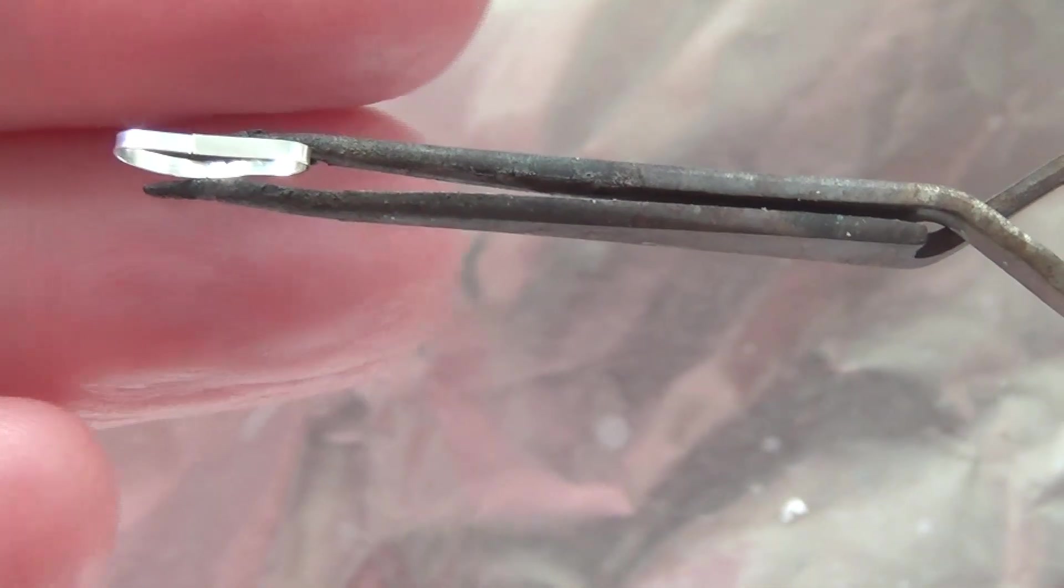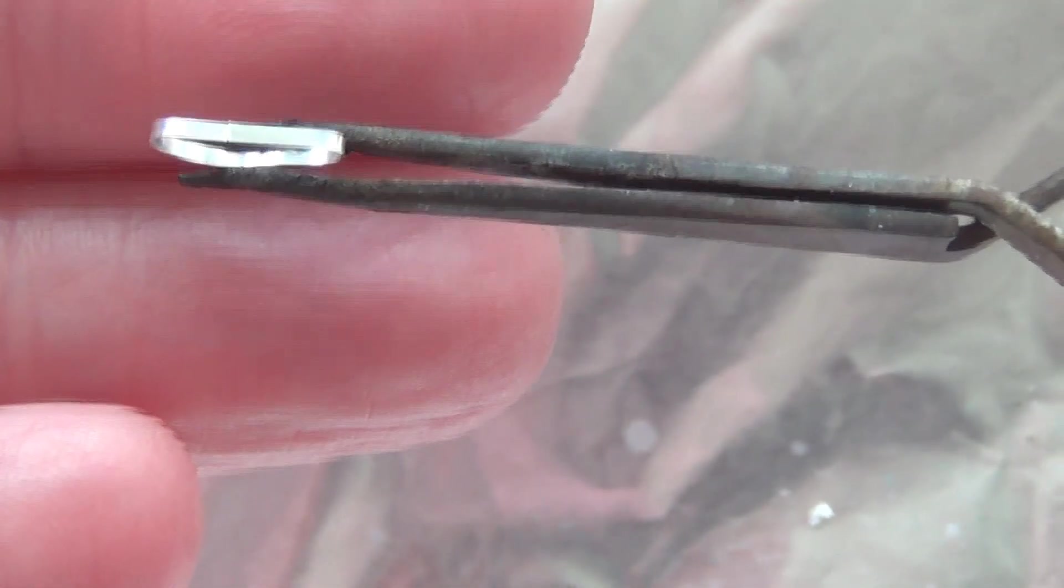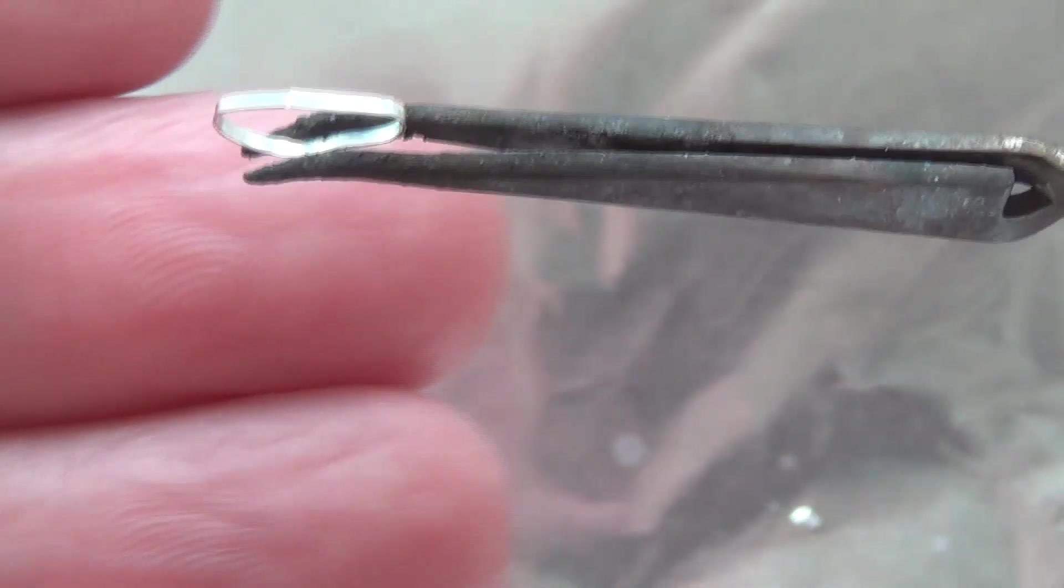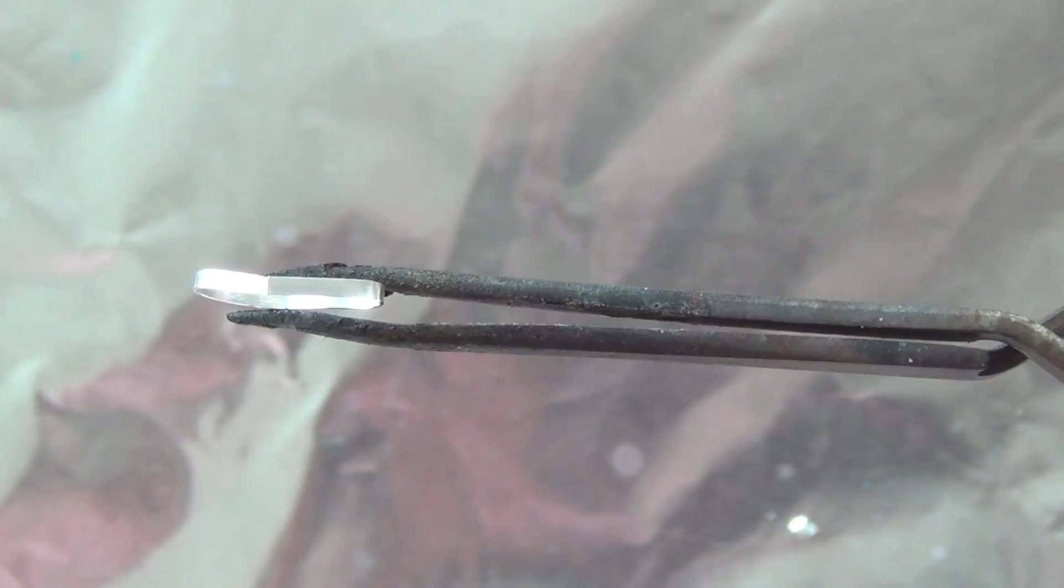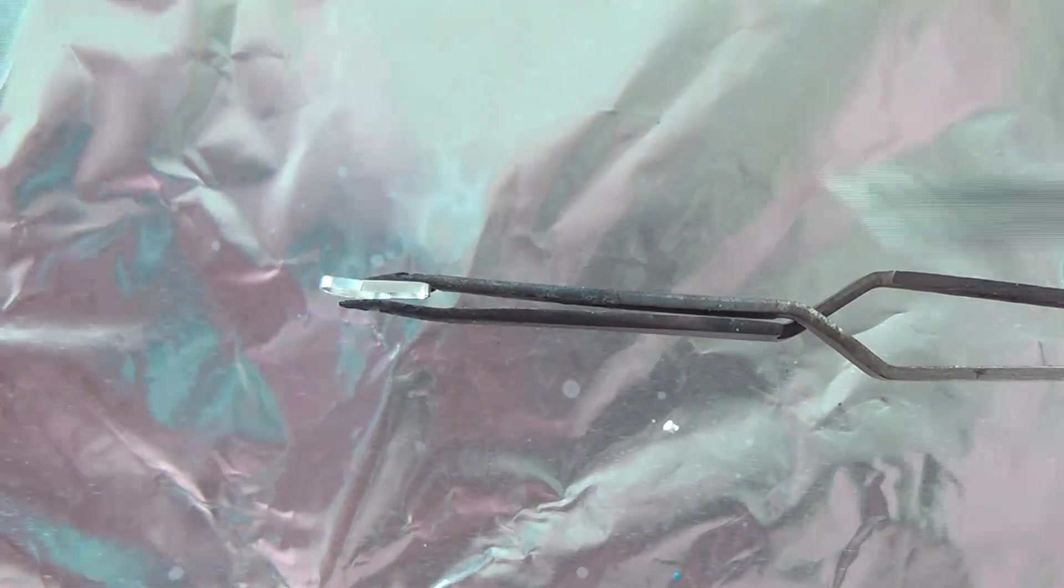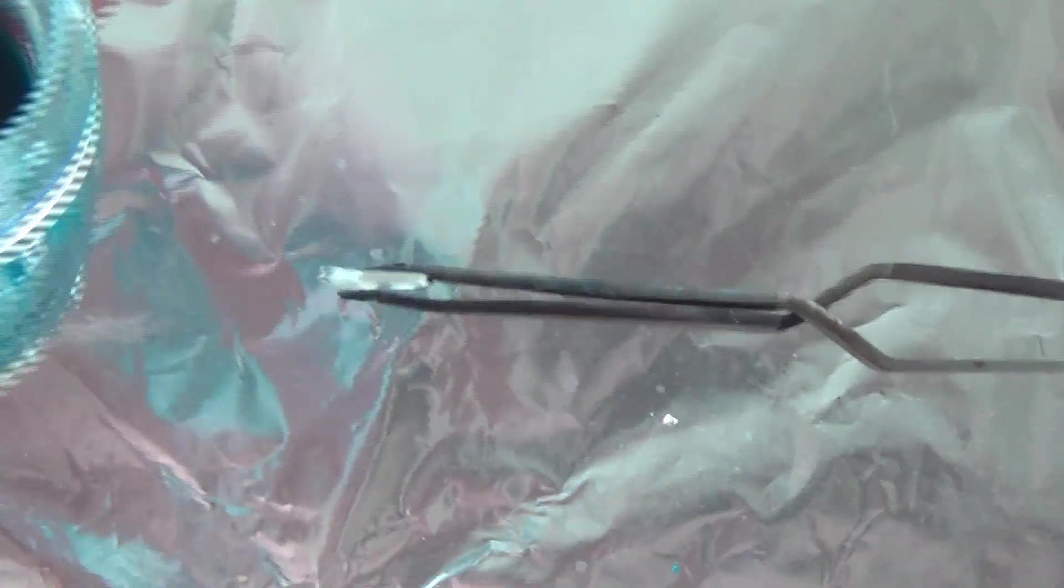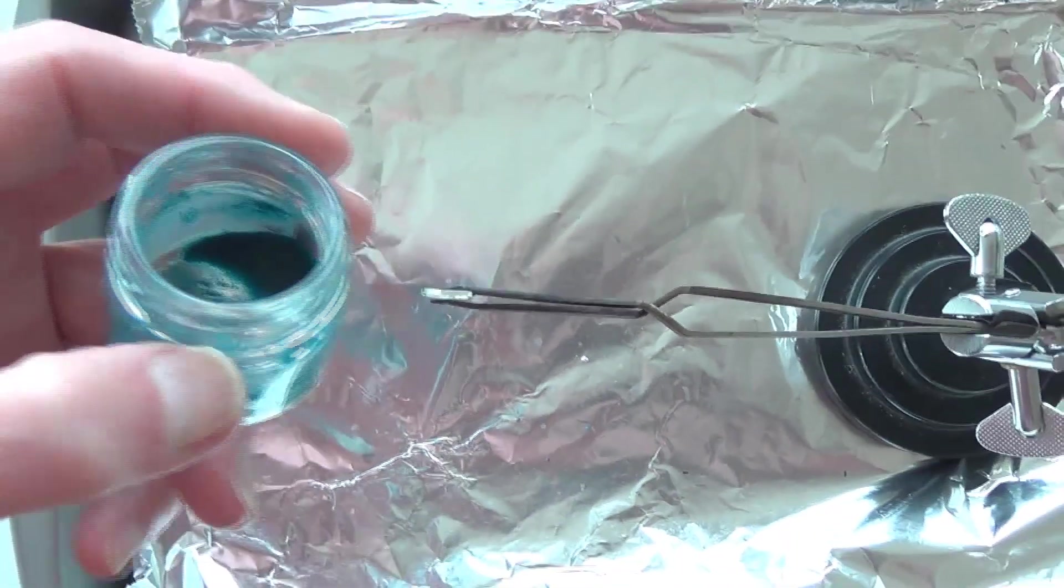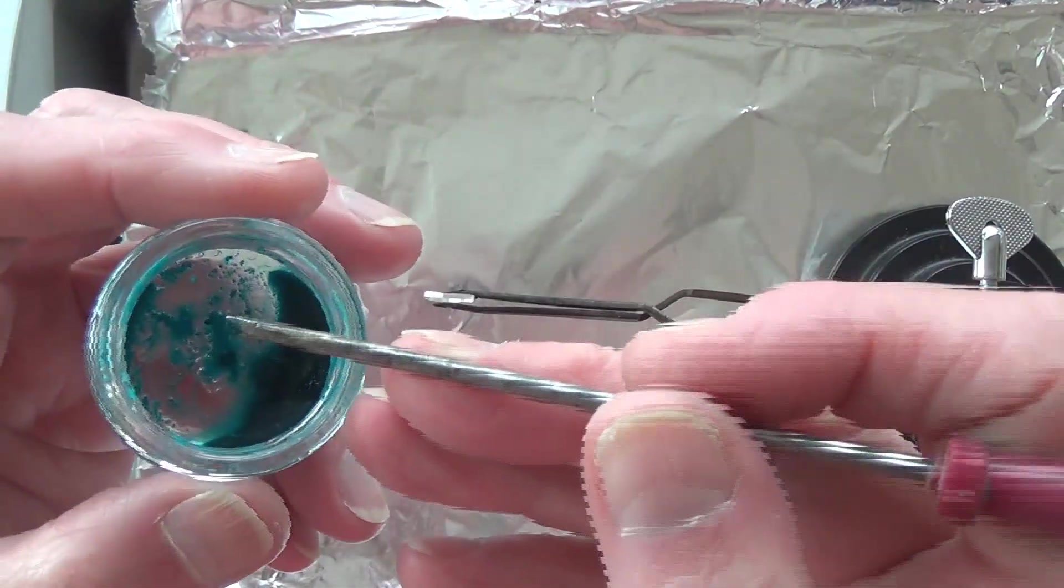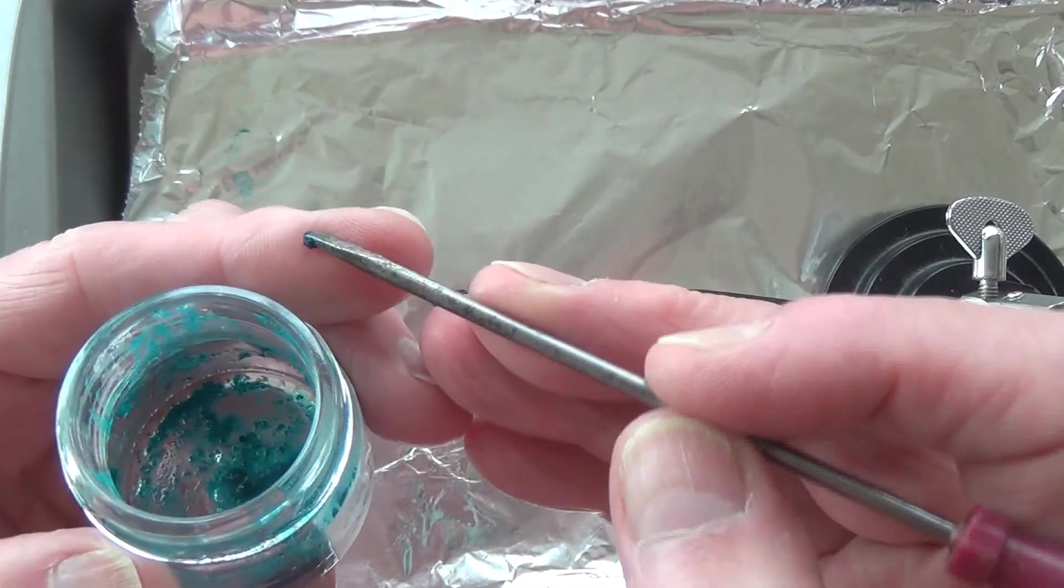I've got the joint of the ring butted together, maybe not perfect. What I'm going to do is I've got some copper acetate crystals that are in a little bit of water. I'm going to put a drop of copper acetate on the joint.